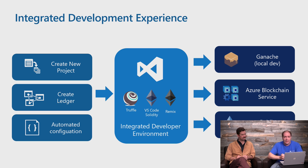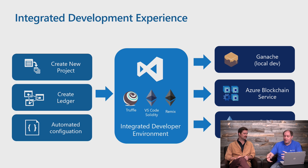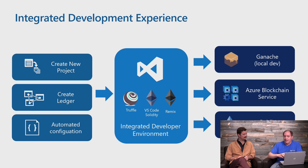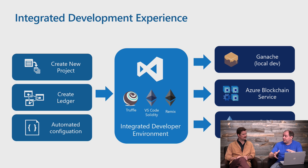In the bottom left corner is the automated configuration, which is another stumbling block people run into: once I've created my ledger and my source code, how do I configure that toolset so that I can communicate with these different blockchains? It's a little bit of an art, understanding what the RPC endpoint is, which port numbers and all these different things. We're taking a step to automate that — we want to handle people who are new to the space, but if you're an expert, you can totally break through and go into the expert-level details if you need to.